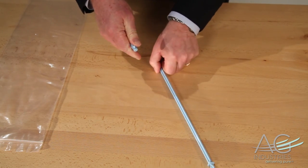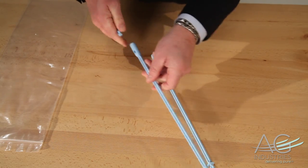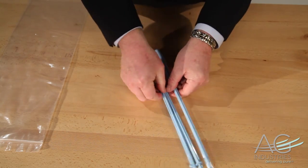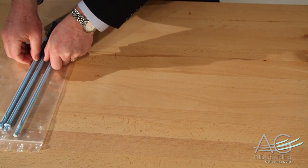To disconnect the wand, press the small button at each joint section, slide the sections apart and place them in the provided bag for convenient storage or travel.